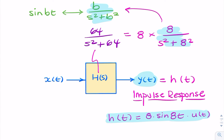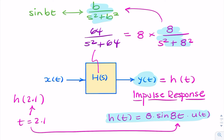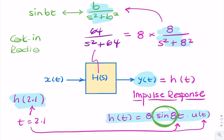Now, if the question had asked for h of 2.1, for example, we simply substitute t equals 2.1 in there. If the question asks for h at a particular point in time, we need to do that. But watch out — in cases like this, because we've got a trigonometric function, the calculator has to be in radians. The easiest way to get questions like this wrong is to calculate the sine in degrees.